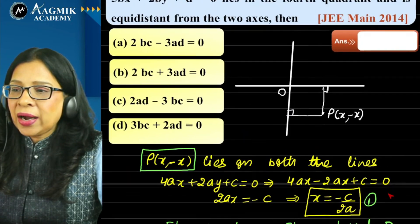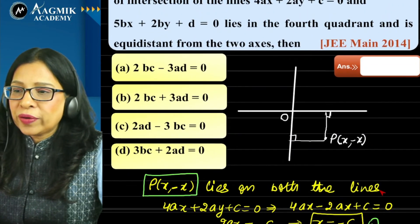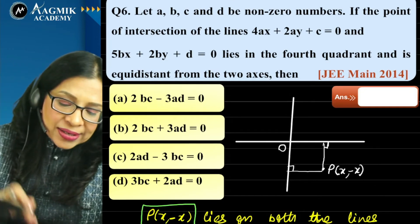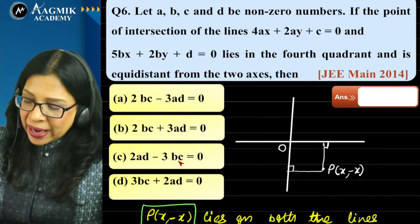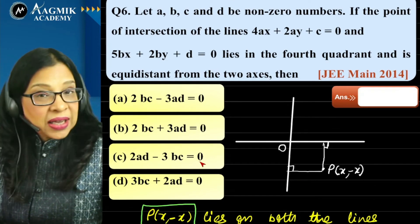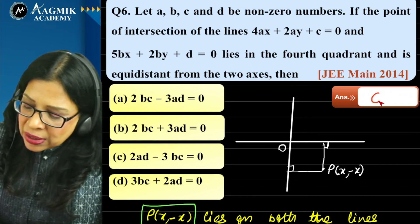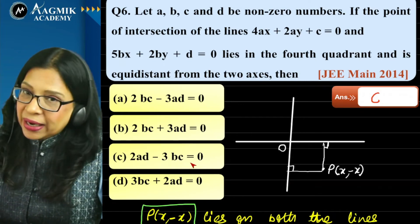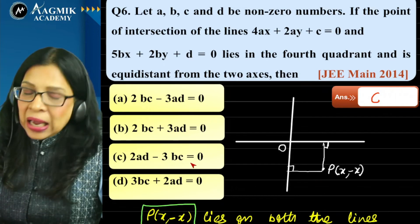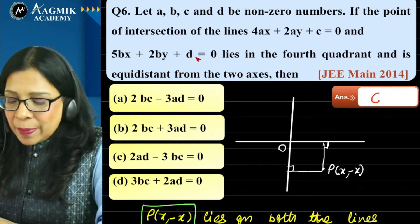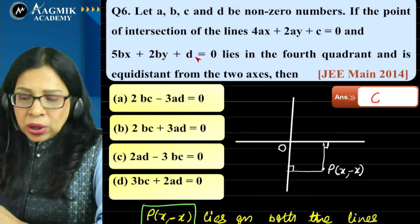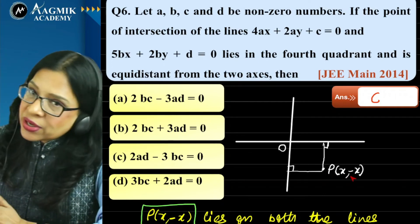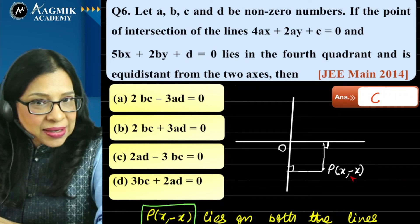Therefore 2AD − 3BC = 0 is the required relation, which is option C. You could also solve by finding the intersection point first and then applying the equidistance condition — same result.